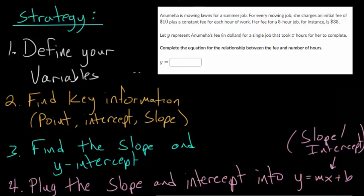Now, after defining your variables, you want to go and find that key information. So basically look for the numbers. You've got a 10 there, a 5-hour job is $35, and so on. You look for that key numerical information, and it's usually going to be a point on the line, an intercept of the line, or you might even find the slope of the line. And then from that key information, you want to find the slope and the y-intercept. And once you have that,